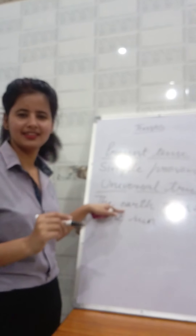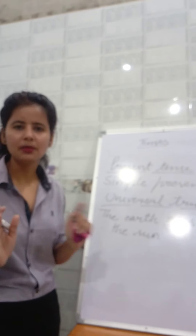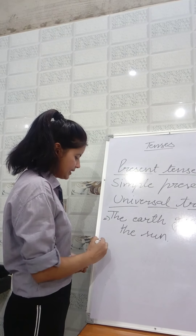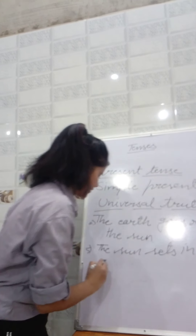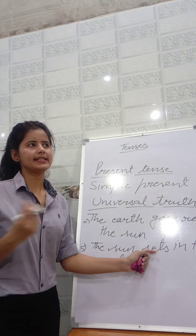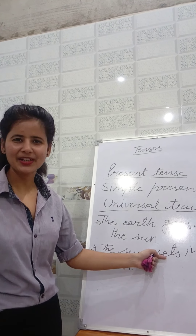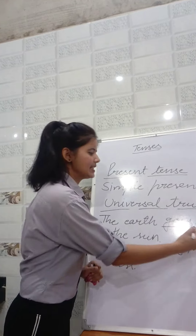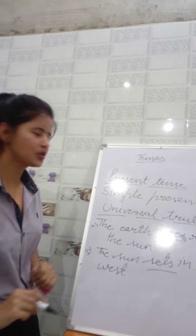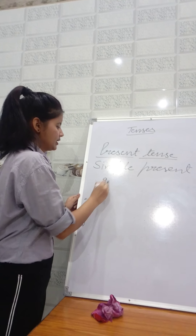We know the earth goes round the sun. Can anybody stop the earth? Nobody can. So this is a fact made by nature and it cannot be changed by anyone. Similarly, the sun sets in the west — can we change its direction to north or south? No, not at all. So this is also a natural fact that nobody can change. That is why we make these sentences in simple present tense.